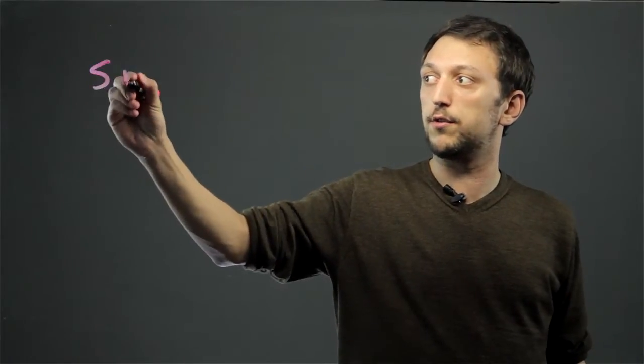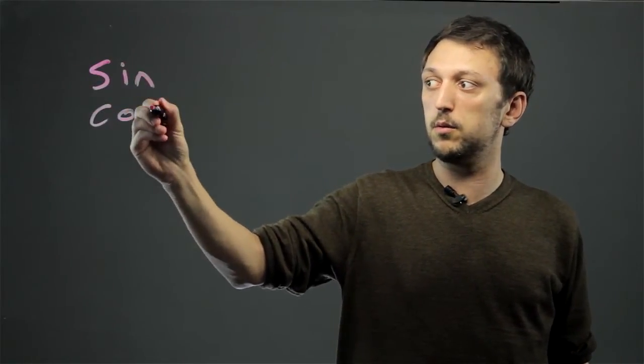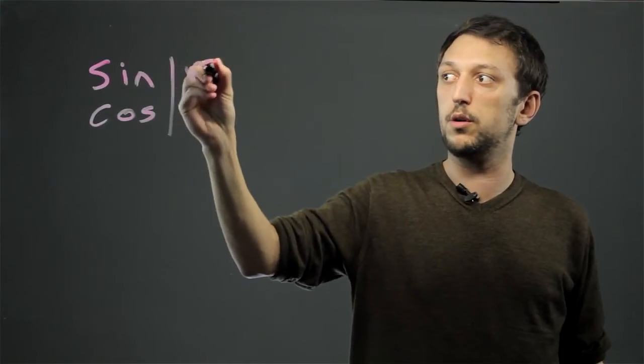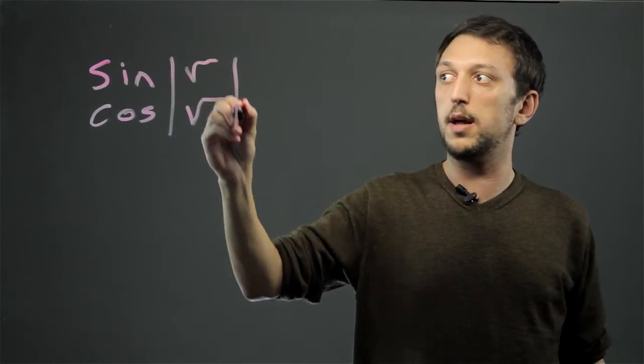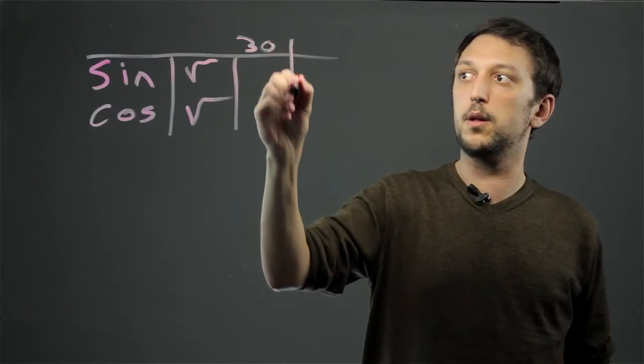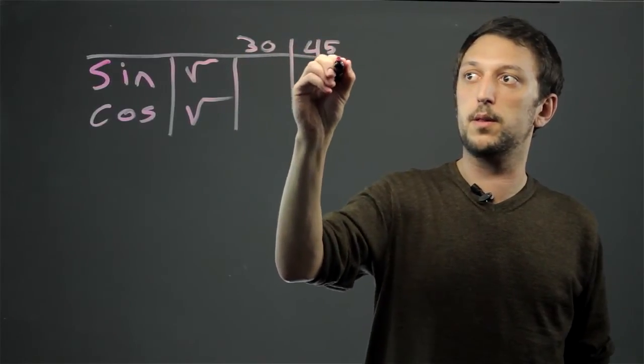And the chart is your sine, your cosine, root, root, and then you're going to say 30, 45, 60.